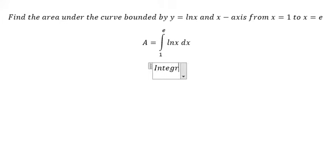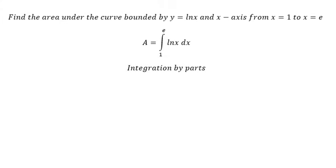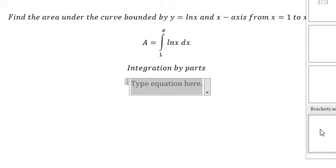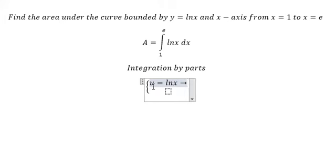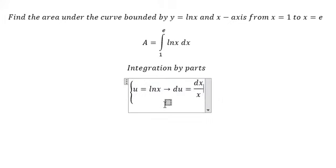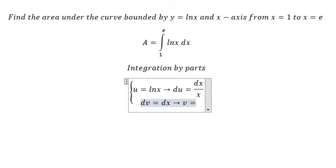We need to find the value of this integral using integration by parts. We let u = ln(x), so taking the derivative of both sides gives du = dx over x. For dv, we set dv = dx, so v = x.